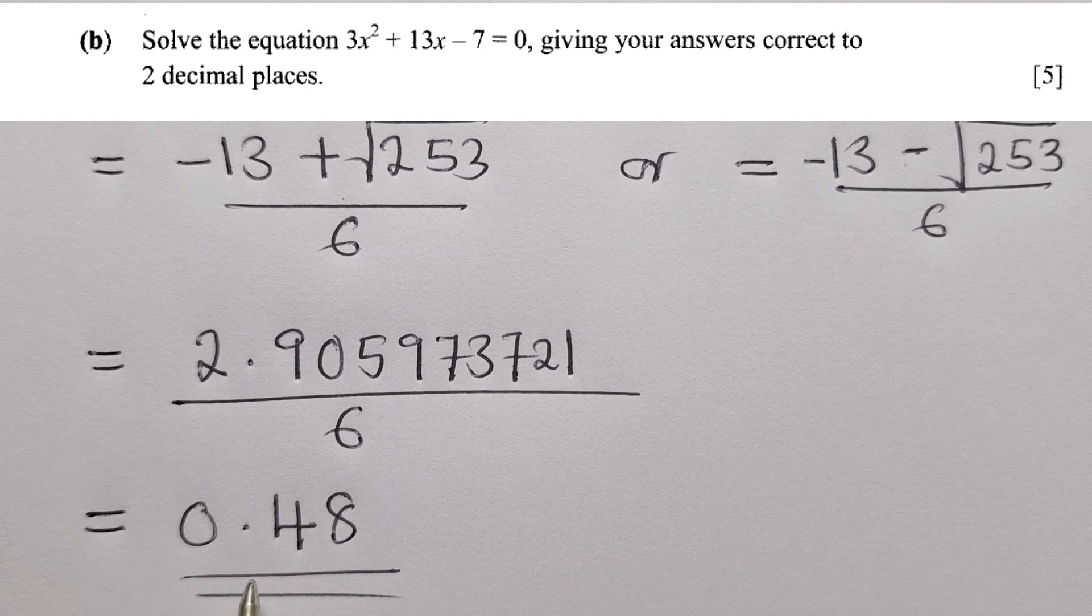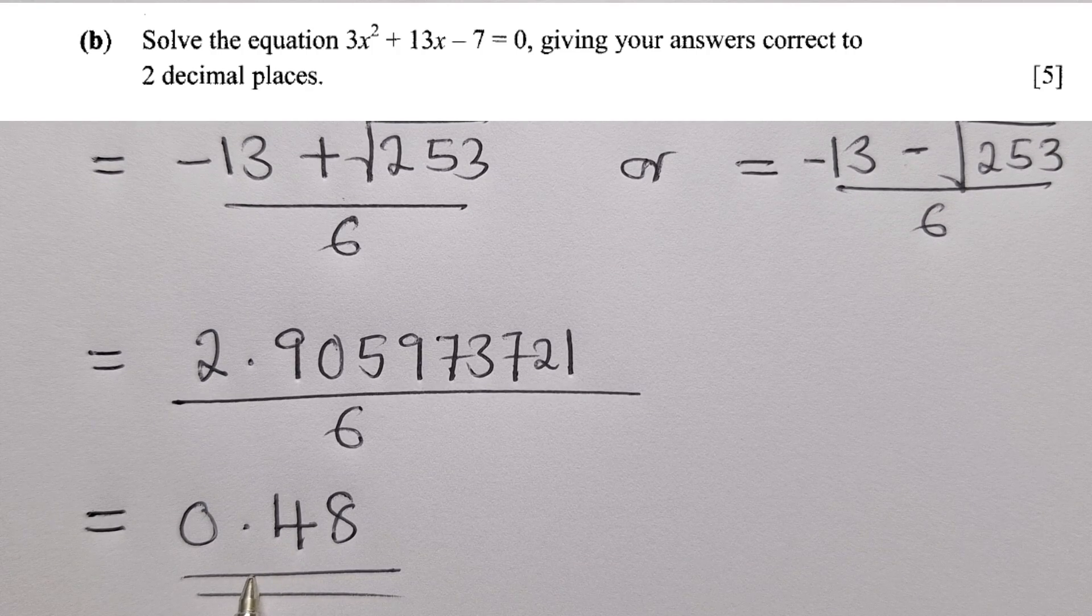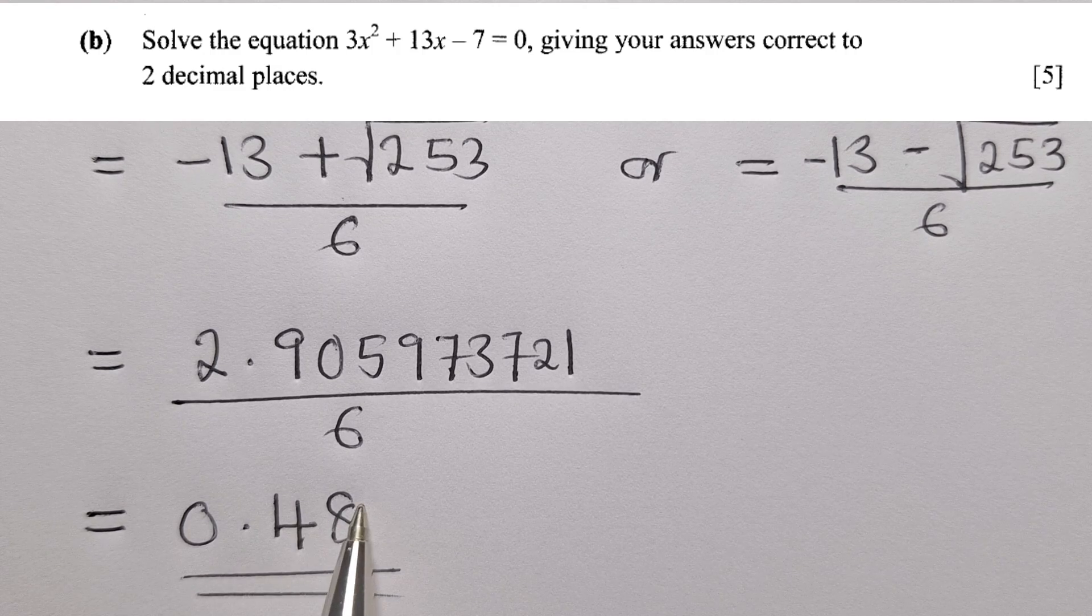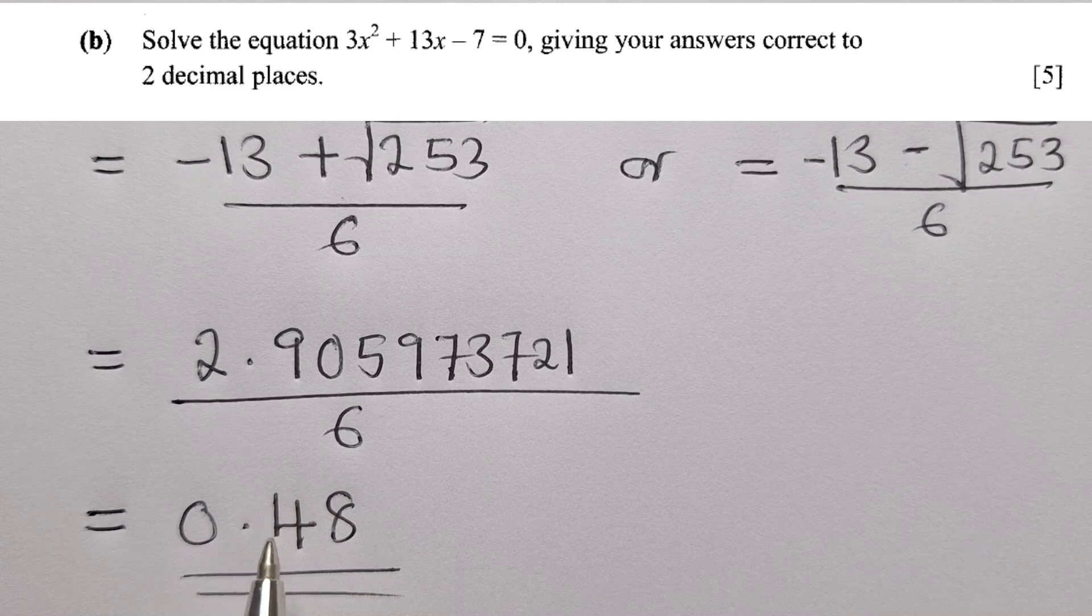So this is the final part of one of the solutions. And they have said, you write your answer in what? We're giving your answer correct to two decimal places. So it's supposed to be two decimal places. One, two.